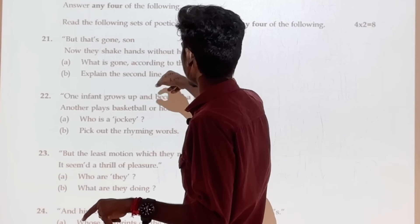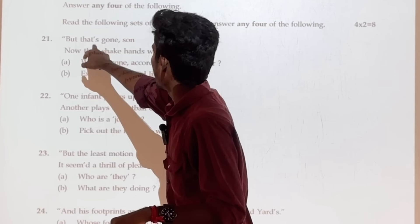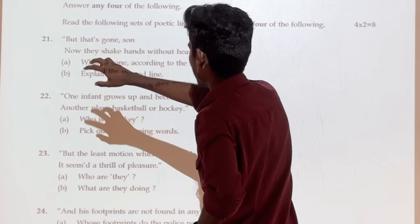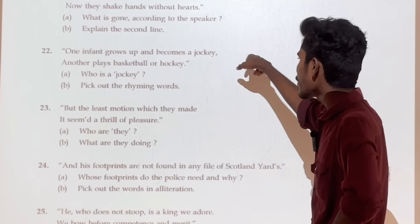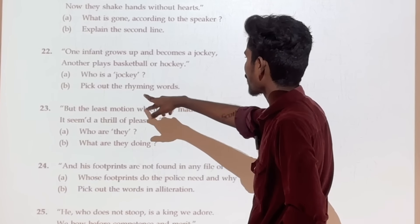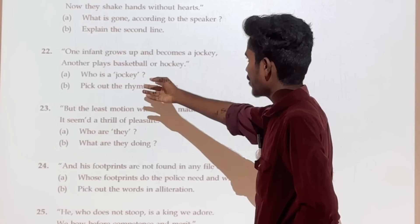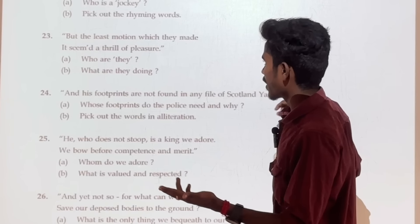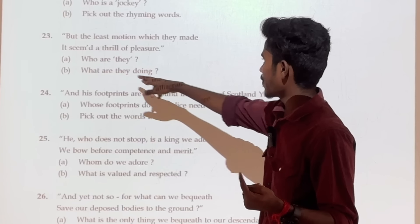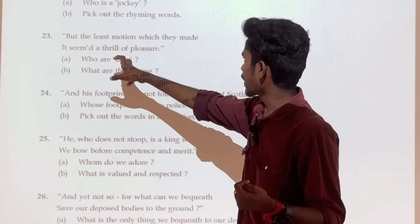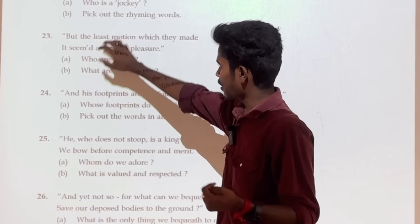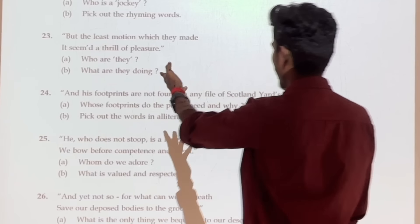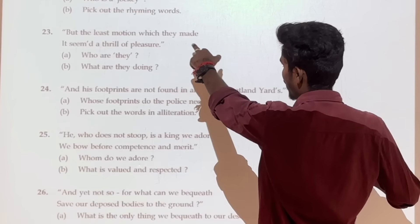The first question: What is Gone according to the speaker? Bud, that's Gone, Sun. Where should you be the answer to that one. Hand it to the second line. What is happening in the second? Who is a jockey? Pick a rhyme and verse. You can understand the rhyme and verse. Rhyming verse, rhyming scheme, alliteration. Tell the figure of speech directly. Who are they? Who is the first question? Second question is the answer. What are they doing? What's happening? Which they made.